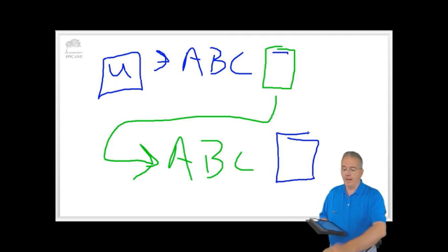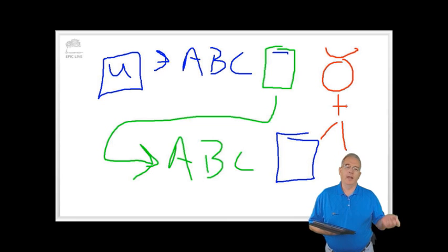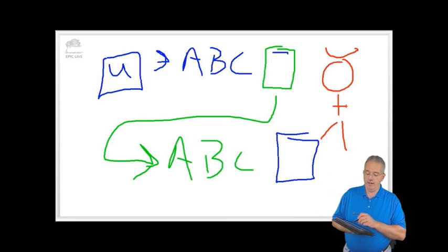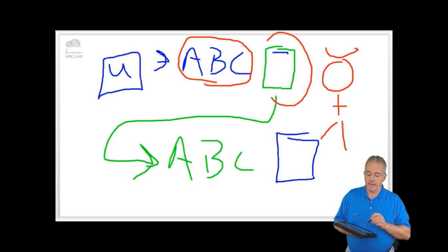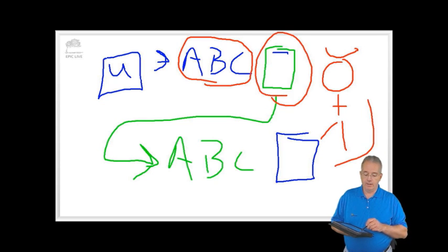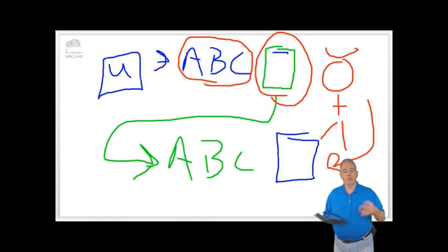The only problem is that we have Evil Anthony. You can tell he's evil because his halo is broken. And what will happen with Evil Anthony is if he hears that conversation that says, ooh, it's A, B, C, and he can get a copy of that encrypted document, he can also unencrypt it.